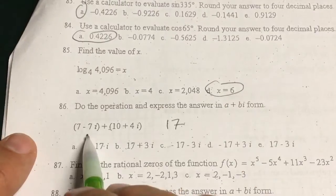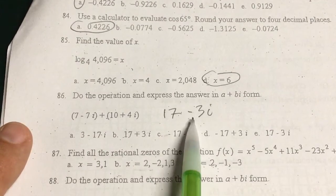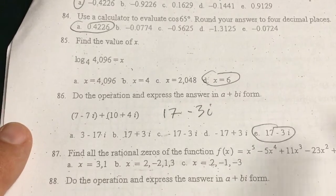No calculator. 7 plus 10 is 17. Negative 7 plus 4 is negative 3i. Let's see here. 17 minus 3i. Choice B.